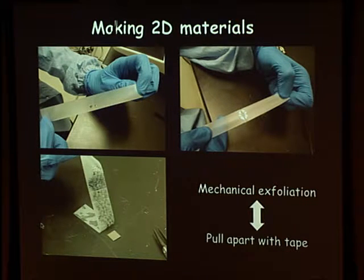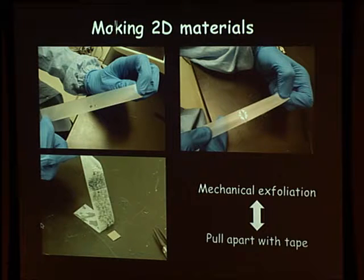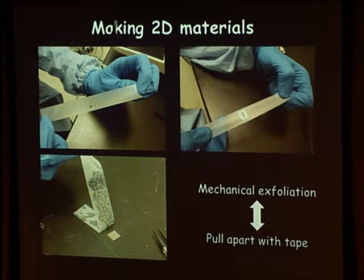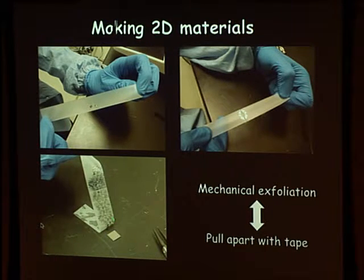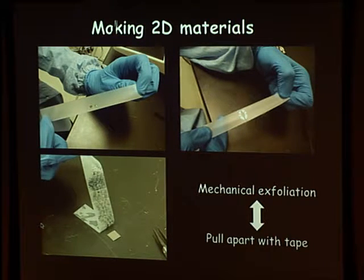Before telling you about what happens, I need to tell you how to make these structures. The simplest way is mechanical exfoliation — basically scotch tape. You take your crystal, stick it on tape, peel it apart, and repeatedly halve the thickness until you get thin enough. You then transfer it onto a silicon oxide substrate, peel the tape off, and hope you've got a monolayer. This works and produces high-quality crystals, but it requires grad students and isn't great for applications.